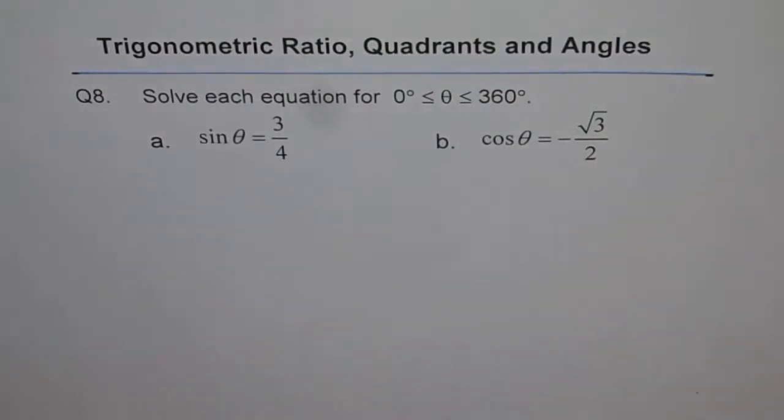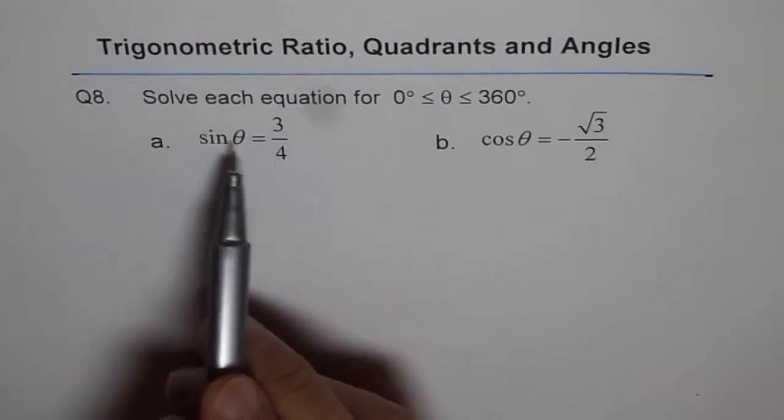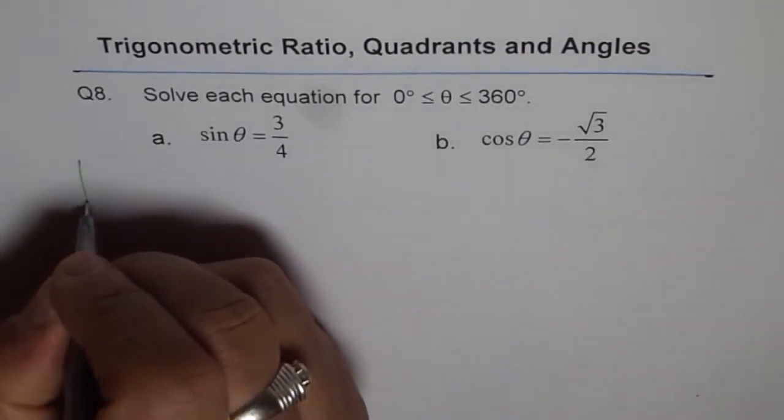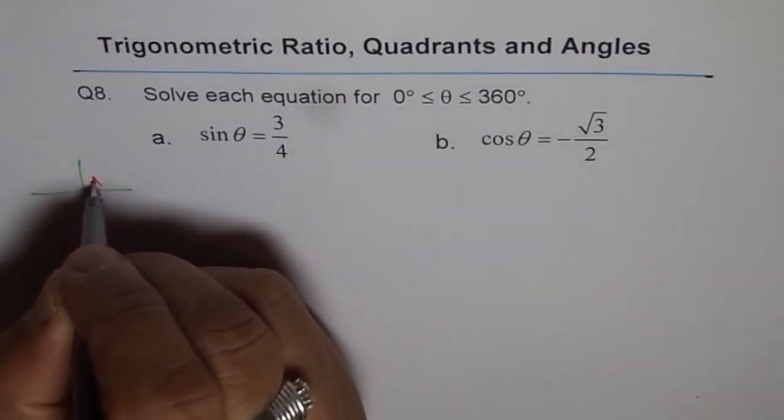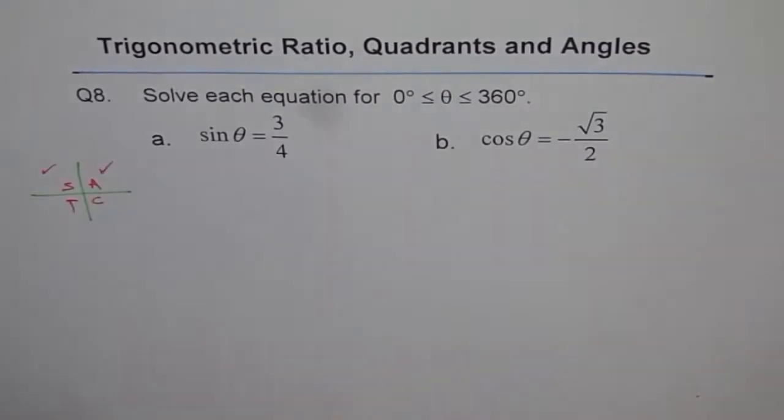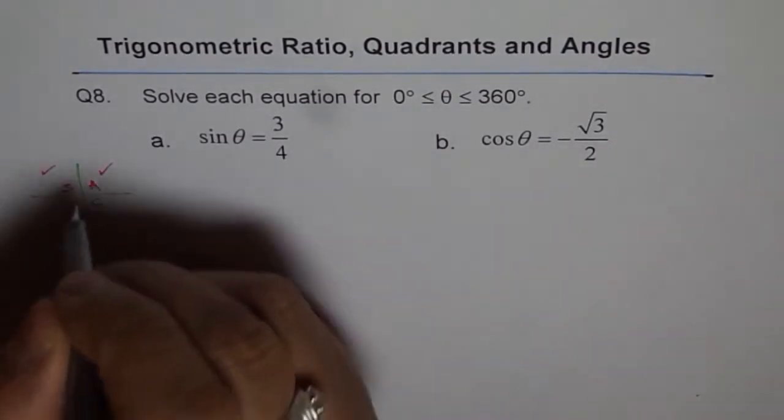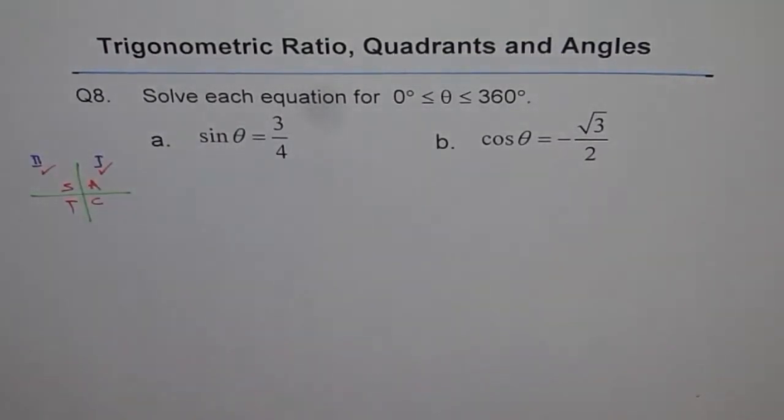Now here is my solution. When I say sin θ is 3/4, I am also saying that sin θ is positive. Now sin θ is positive in two quadrants. As per the CAST rule, sin θ is positive here and here. That means quadrant 1 and quadrant 2. So we are expecting two solutions.